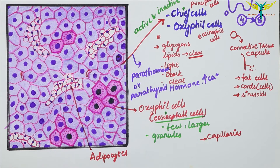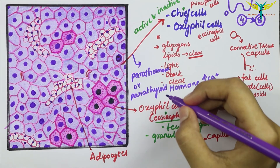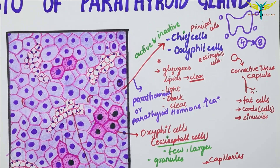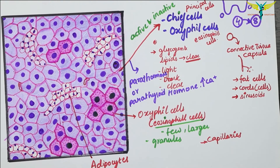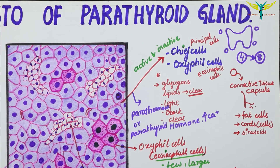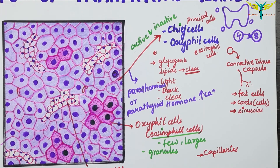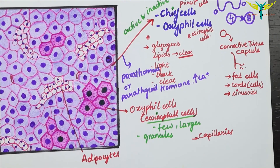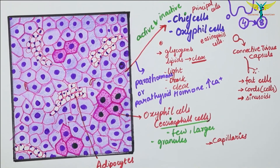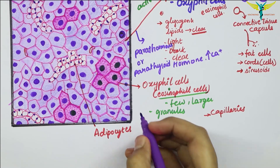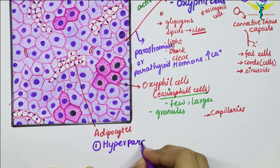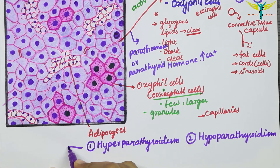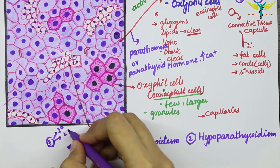The clinical correlations of the parathyroid gland include hyperparathyroidism — hyper function causing excessive parathyroid hormone — which is of three types: primary, secondary, and tertiary hyperparathyroidism. The other clinical condition is hypoparathyroidism, which refers to deficiency or absence of parathyroid hormone due to lower secretion.